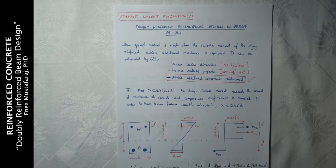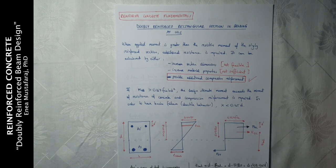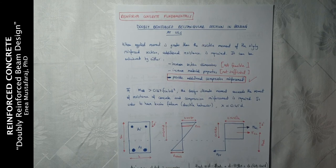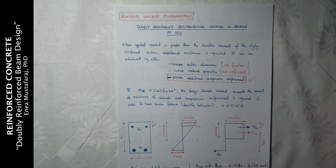When the applied moment is greater than the resistive moment of a singly reinforced section, additional resistance is required. It can be achieved by either increasing the section dimensions, which in most cases is not feasible, or by increasing material properties — providing higher strength concrete or higher strength steel — which also cannot be very sufficient in most cases. Or we could provide additional compression reinforcement in the upper part of the section.